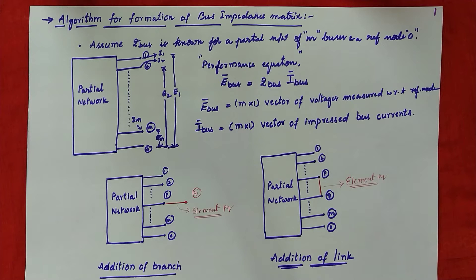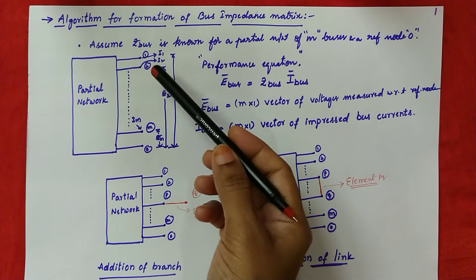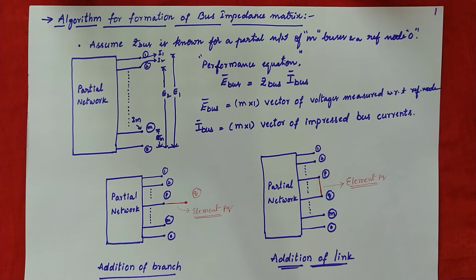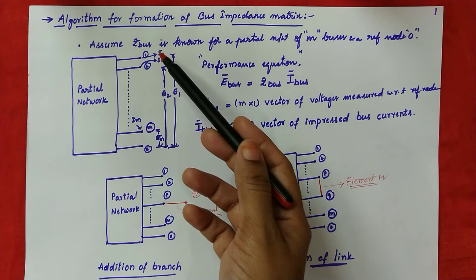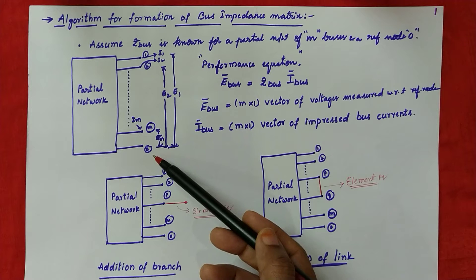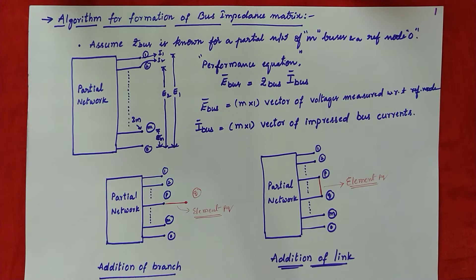So you have the first bus, second bus, and so on up to the Mth bus. I1, I2, and so on IM are the currents impressed at corresponding buses. E1 is the voltage across bus 1 with respect to reference, and E2 is the bus 2 voltage with respect to reference 0. The performance equation can be written in three forms: first, a bus frame of reference; second, a branch frame of reference; and third, a loop frame of reference.